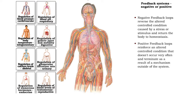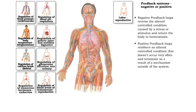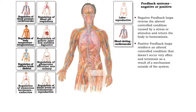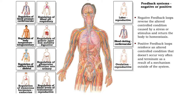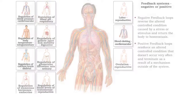Positive feedback systems are fewer in number because they reinforce an altered control condition that doesn't happen very often. Labor and childbirth is an example. A positive feedback loop can only be stopped by a mechanism from outside of the system, such as the birth of the baby.